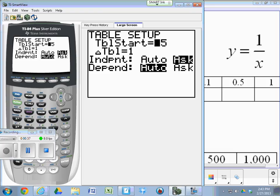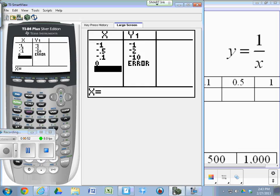The table starts and the table change doesn't matter. They do not matter. Just make sure that independent is on ask. After you do that, when you go to second graph, you should now have the ability to put in any number you want for x to find y.